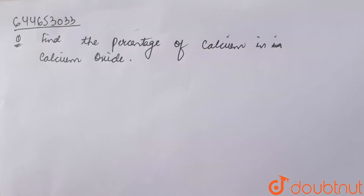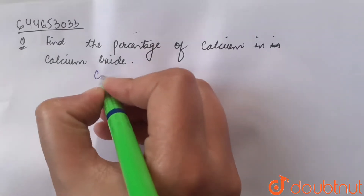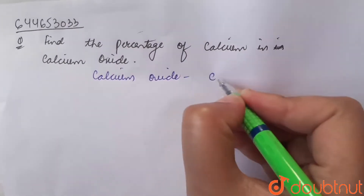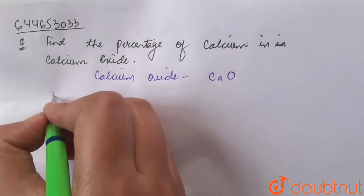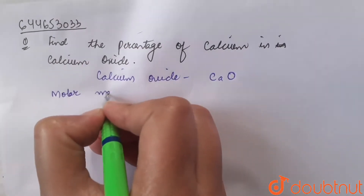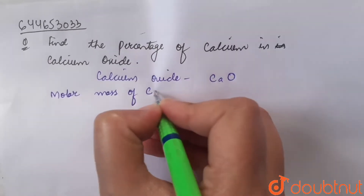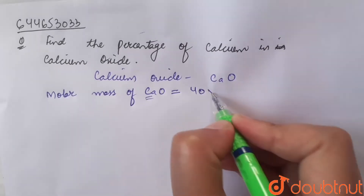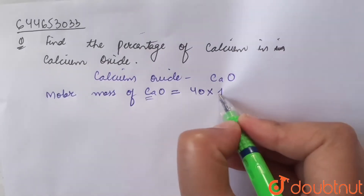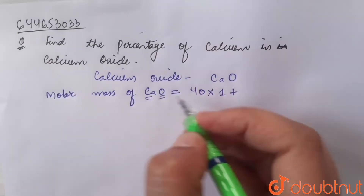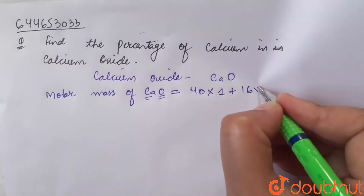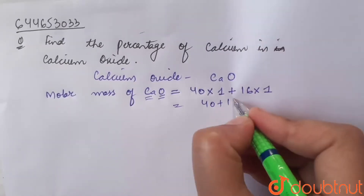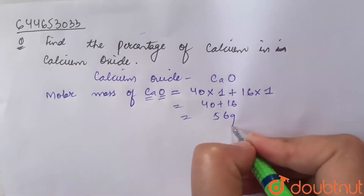The question says: find the percentage of calcium in calcium oxide. Calcium oxide has the formula CaO. The molar mass of CaO equals the atomic mass of calcium, which is 40 g/mol, multiplied by one atom of calcium, plus the atomic mass of oxygen, which is 16 g/mol, multiplied by one atom of oxygen. That equals 40 plus 16, which equals 56 grams per mole.